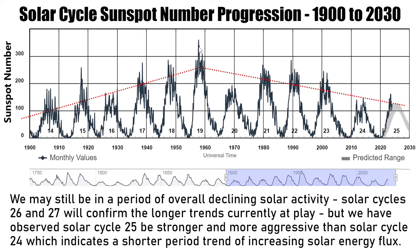Since the late 50s and early 60s, we've been on a decline. Solar cycle 20, 16, and 24 — our most recent — were anomalous lows, and this decrease may continue. But we do see that for solar cycle 24 we had this anomalous low, and now we are on an energy increase. Solar cycle 25 is stronger and more aggressive than solar cycle 24, indicating a shorter period trend of increasing solar energy flux. That's happening right now — there's more energy in our environment due to solar cycle 25.